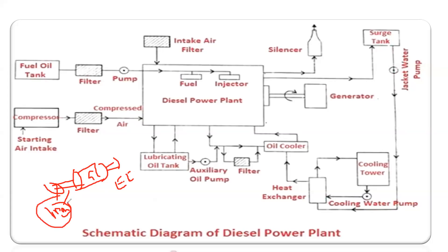As a prime mover, we use a diesel engine to produce electrical energy. Such a plant is called a diesel power plant. This is the definition of diesel power plant.